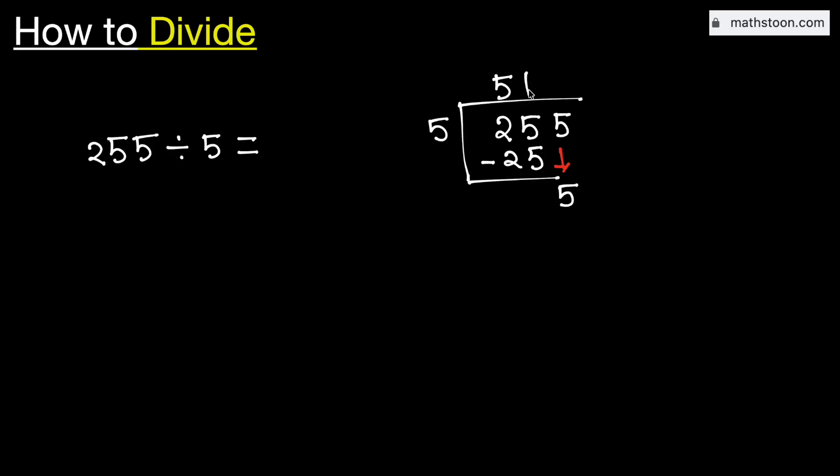Now 5 times 1 is 5. Subtract, we get 0. As we have got the number 0 and there is no number to bring down here, so we will stop.